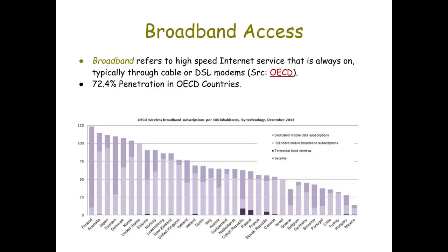What that means is there is more than one broadband connection per person. For example, I have multiple connections including my cable network at home, an internet service plan for one of my tablets, and cellular data plans for each of the phones in our house. If you think about the different plans you have for different devices, you can see how we're now getting over 100% penetration. But many countries — like Mexico at the bottom of the list — don't even have 25% broadband penetration. That means if they have internet access, they are using something slower than broadband.